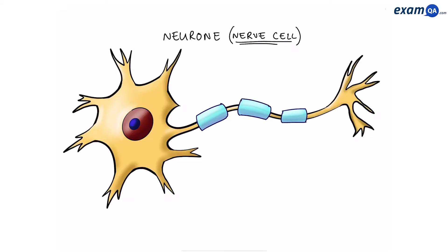Action potentials. Here we have a neuron, also known as a nerve cell. And just like most cells in your body, it has a nucleus, a cell membrane, a cytoplasm, and other organelles.